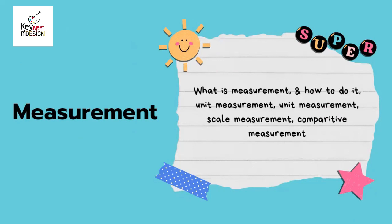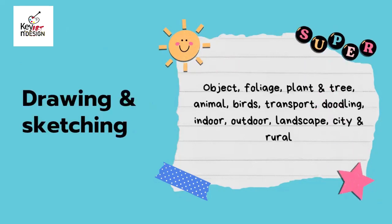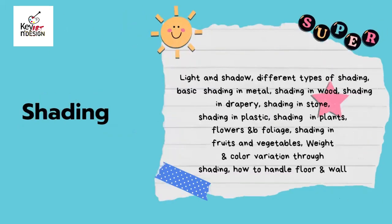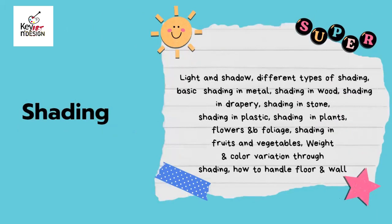In measurement we have what measurement is, how to do it, unit measurement, scale measurement, and comparative measurement. Moving on to drawing and sketching: objects, foliage, plants and trees, animals, birds, transport, doodling, indoor and outdoor landscape, and city and rural settings.